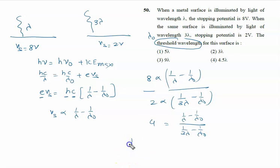Cross product, we will get 1 upon lambda minus 1 upon lambda node equals 4 upon 3 lambda minus 4 upon lambda node. Further, we can write this is 1 upon lambda, this is 4 upon 3 lambda.